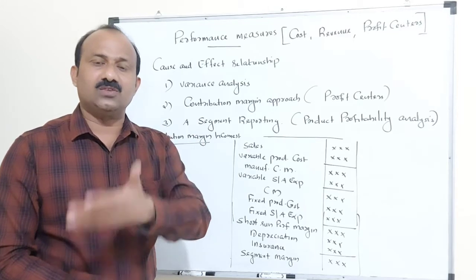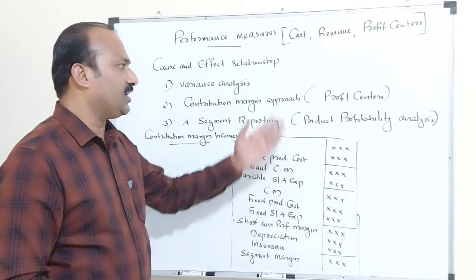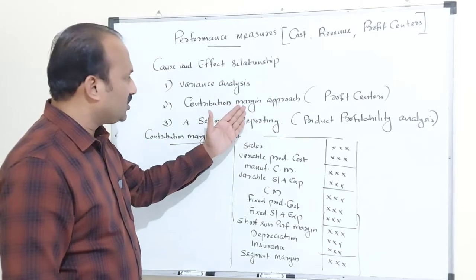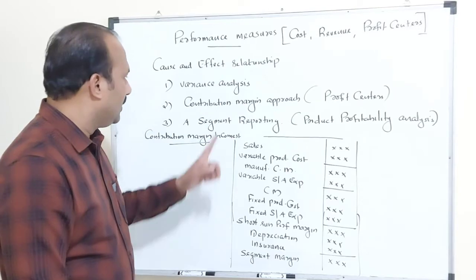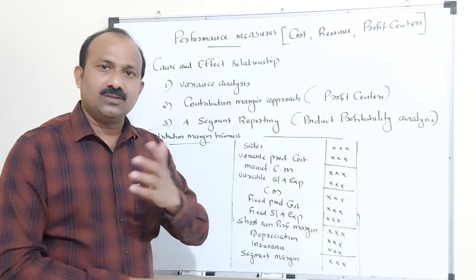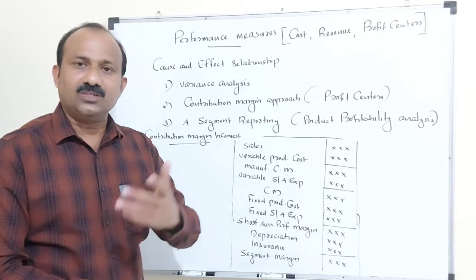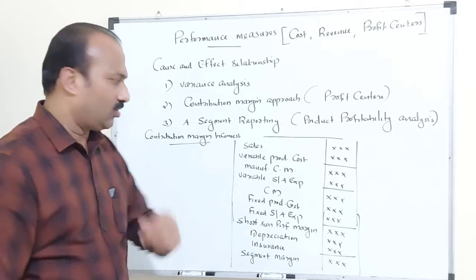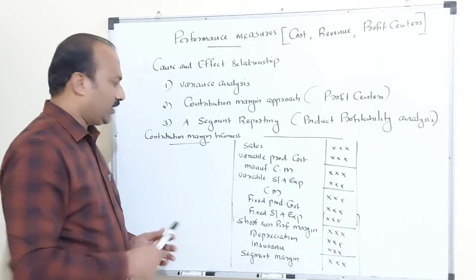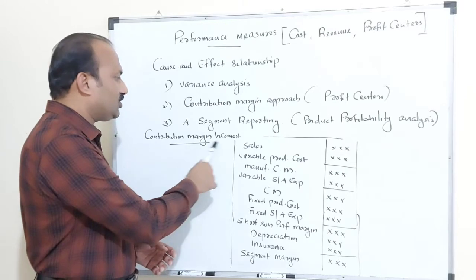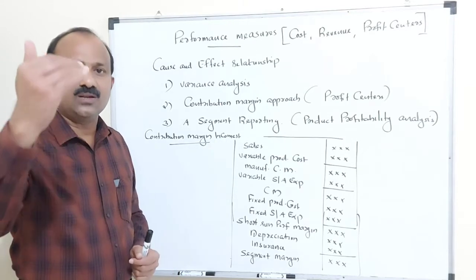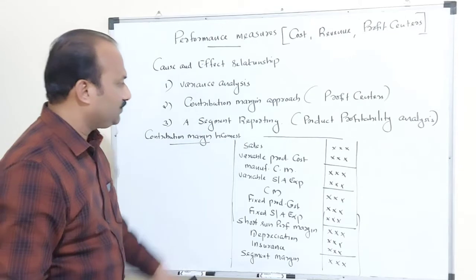Next is contribution margin: Sales minus variable cost equals contribution margin. This measure can also be taken. Segment reporting can also be done based on the product to analyze whether it is profitable or not. An example is given for a contribution margin income statement to understand these points more clearly.